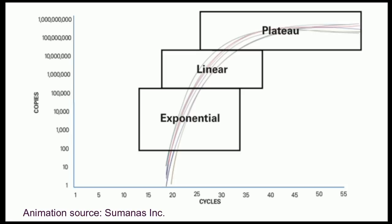With real-time PCR, there are three amplification stages. The first stage is known as exponential, the second is linear, and the third is plateau.